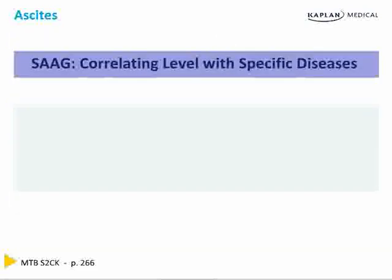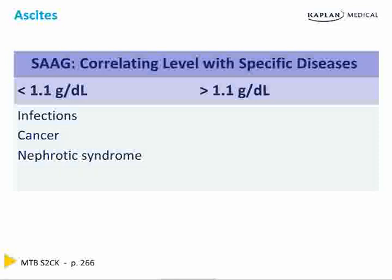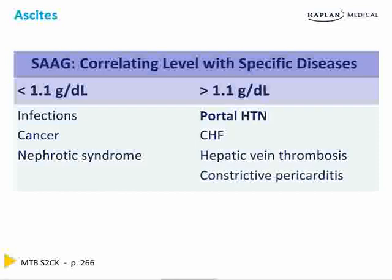A SAG ratio less than 1.1 means the ascites is coming from either an infection, cancer, or nephrotic syndrome. If the SAG is greater than 1.1, the ascites is coming from portal hypertension, CHF, hepatic vein thrombosis, or constrictive pericarditis.